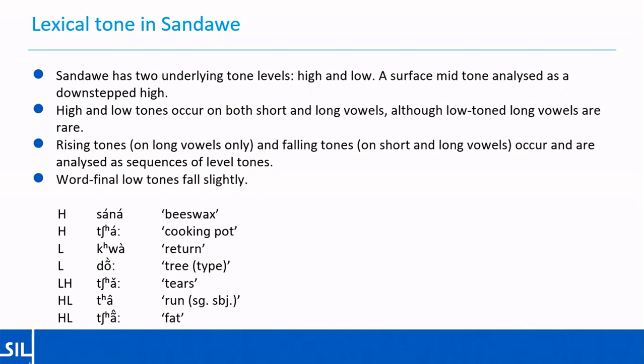Here are some words to illustrate the tones on short and long vowels. High tone on a short vowel: sana, beeswax. High tone on a long vowel: cha, cooking pot. Low tone on a short vowel: kwa, return. Low tone on a long vowel: dong, type of tree. Rising tone on a long vowel: cha, tears. Falling tone on a short vowel: ta, run with a singular subject. And falling tone on a long vowel: chan, fat.